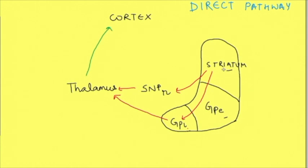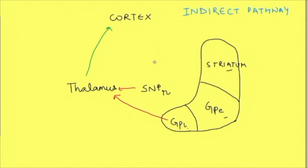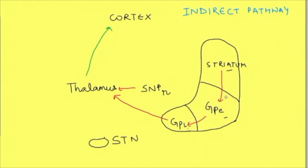The striatal neurons do not fire tonically — only when activated do they cause inhibition. Tonic firing occurs in GPI and SNpr. Because the striatum is directly inhibiting the output nuclei of the basal ganglia, this is known as the direct pathway. In the direct pathway, striatum inhibits GPI so that GPI cannot inhibit the thalamus, meaning the thalamus becomes disinhibited.